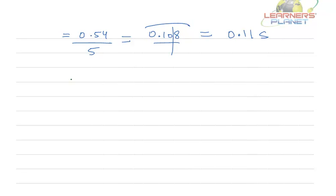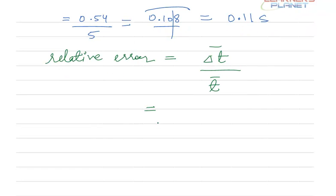After having done the third part, let's come to the fourth part which is the relative error. The relative error is given by the expression delta t bar upon the mean value. So, what is the mean absolute error? It is 0.11 and what is the mean value of time? It is 2.62.